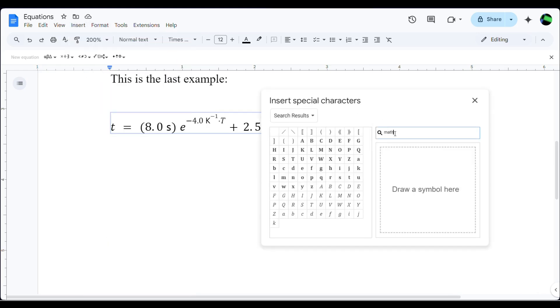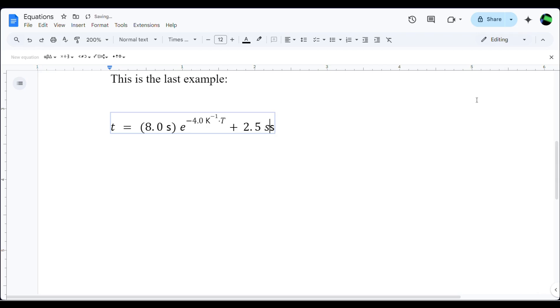Insert Special Character, mathematical sans S. And that looks closer to what IB would expect in your IA.